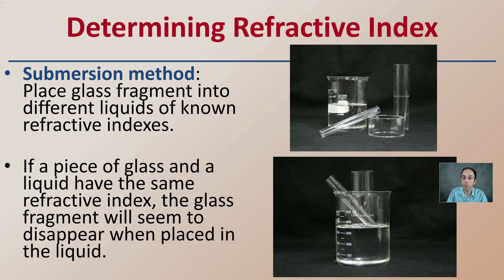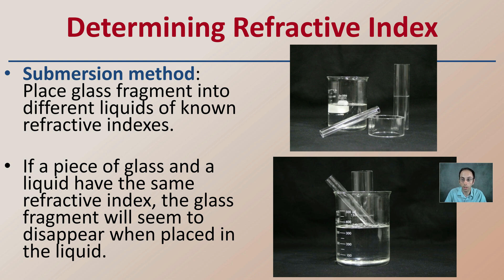How do we determine the refractive index? We can use the submersion method — a quick and dirty method of determining this. You place the glass or fragments of that glass into different liquids of known refractive indexes. If the piece of glass and a liquid have the same refractive index, the glass fragment will seem to disappear when placed in that liquid.